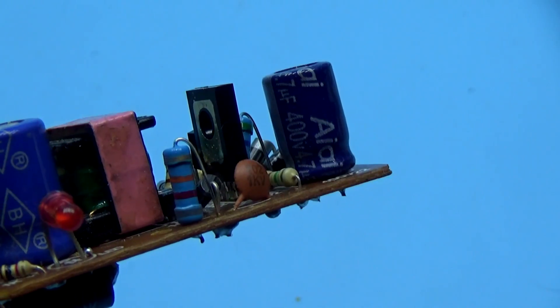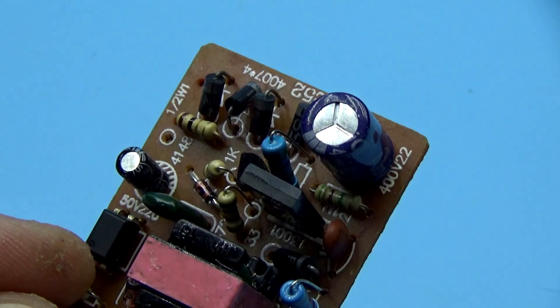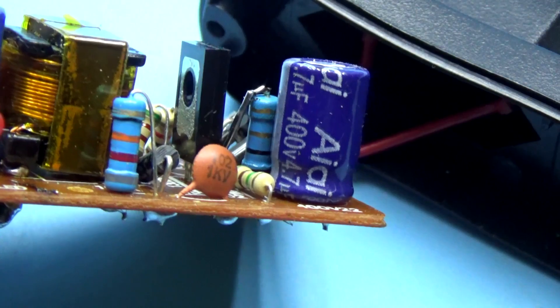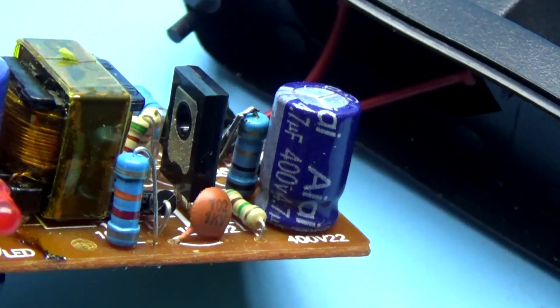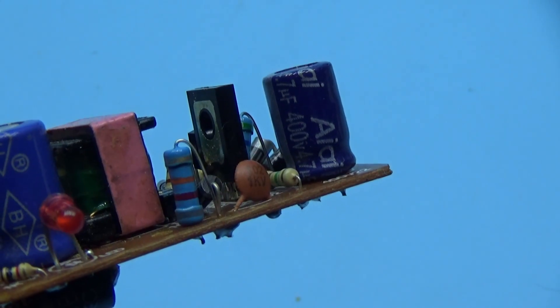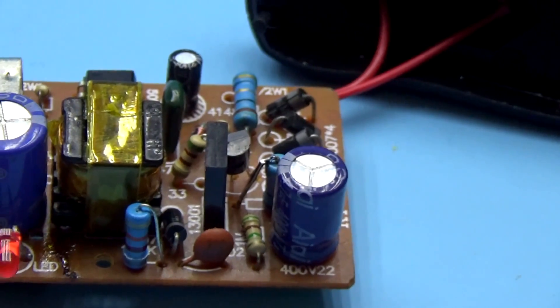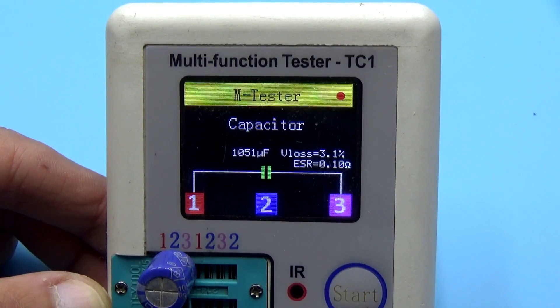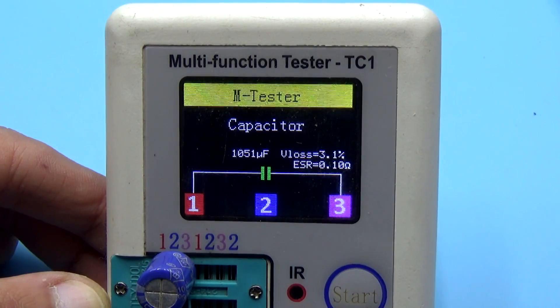The second capacitor is replaced with 4.7µF. Ideally, it is desirable to set 10µF, but there is too little space in the case, so this is the compromised solution. Capacitors must be checked for proper operation, leakage, loss of nominal capacity and internal resistance.